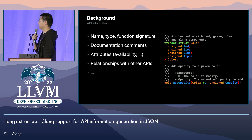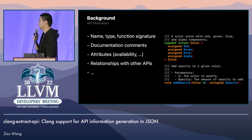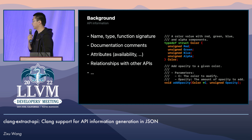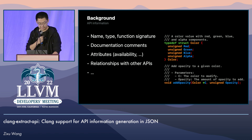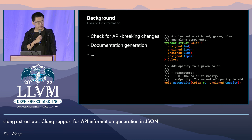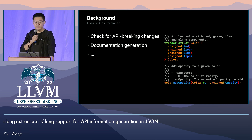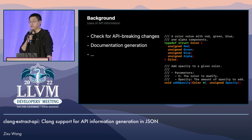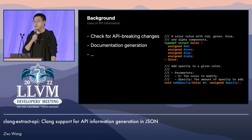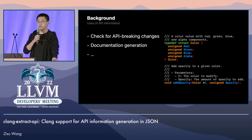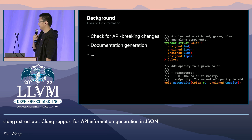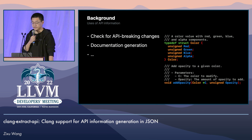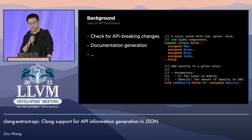For example, here the struct Color has four members: red, green, blue, and alpha. These kinds of API information are extremely useful to library and SDK providers who ship those APIs, as well as to clients who consume them.